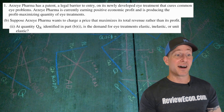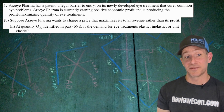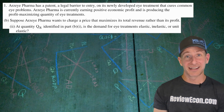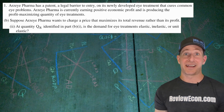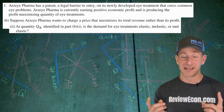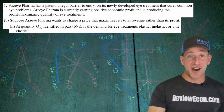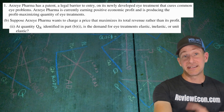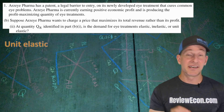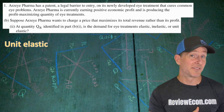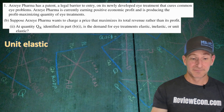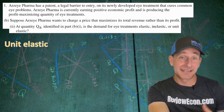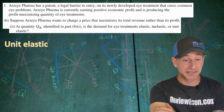At QR identified in part B, is the demand for eye treatments elastic, inelastic, or unit elastic? I think we could have a consistency point if you labeled the wrong quantity. But based on the marginal revenue curve being zero, the demand curve above that is at the unit elastic point. At higher quantities it would be inelastic, and at lower quantities it would be elastic.